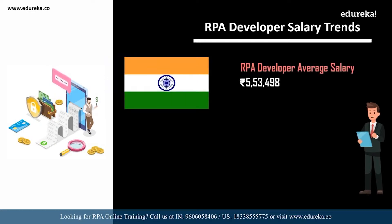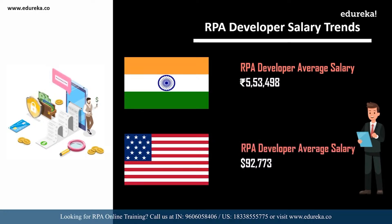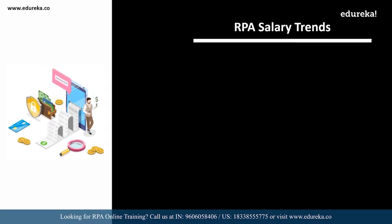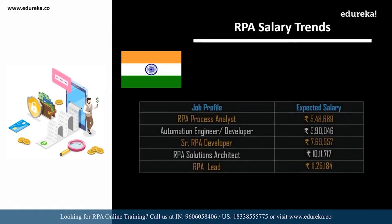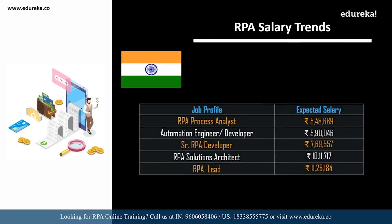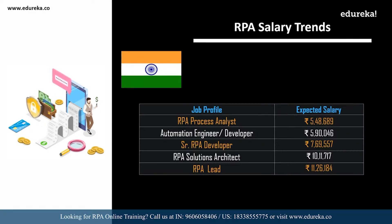According to Indeed.com, an RPA developer in India can expect an average salary of 5,53,000 per annum, and in the USA around 92,000 dollars. Looking at other related roles in India: an RPA process analyst can expect around 5,48,000; an automation engineer or automation developer 5,90,000; a senior RPA developer around 7,69,000; and an RPA solutions architect around 10,11,000.